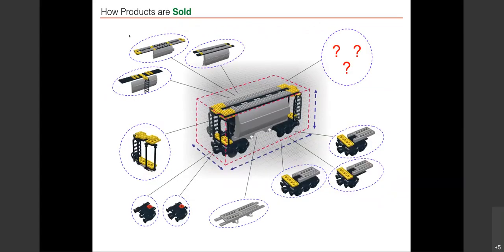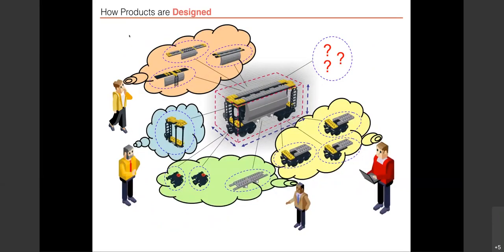To bring focus to what automation means relative to Creo, consider how products are typically sold: changes in size and configuration options. Things either stretch like rubber bands to fill gaps, or selected parts are swapped in on specific increments, or entire sub-assemblies are placed based on configuration requirements. Products are designed by groups with areas of specialty, each with its own logic for how things go together.